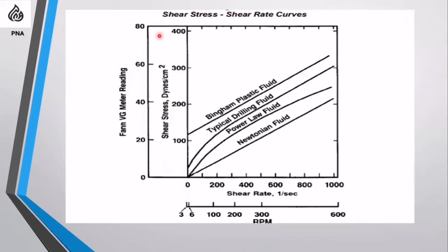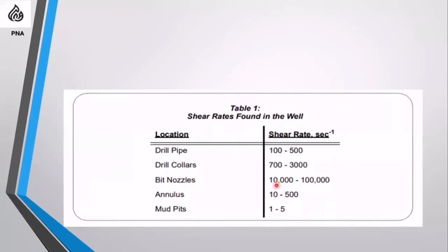The fan readings (shear stress) are recorded while applying these shear rates: 3 RPM, 6 RPM, 100, 200, 300, and 600. We select these specific shear rates because they simulate the shear rates in the hole — for example, inside drill pipe is 100 to 500, drill collars 300 to 700, and bit nozzles have very high shear rates.